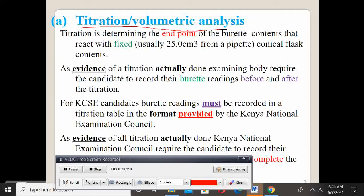Another name is volumetric analysis. So titration is actually determining the end point of the burette contents that react with a fixed, usually 25 ml or 25 cubic centimeters from a pipette. That is the conical flask content.